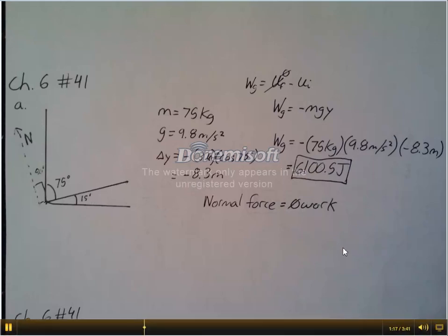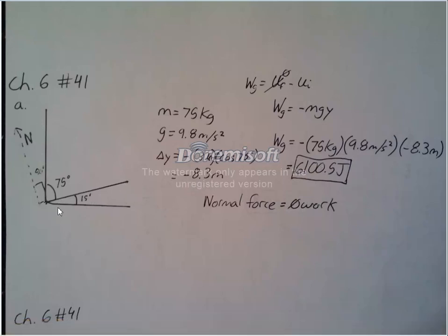Now for the work done by normal force, we know the normal force is always perpendicular to whichever plane we're on. So that would make a 90 degree angle, which would be 0 work done, because the cosine of 90 would be, of course, 0.